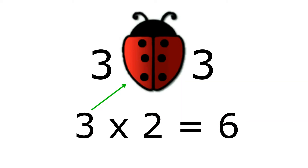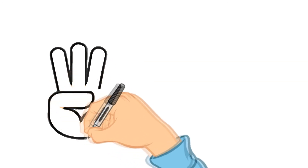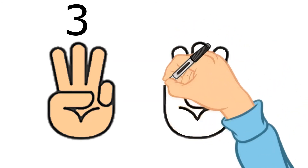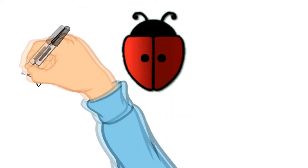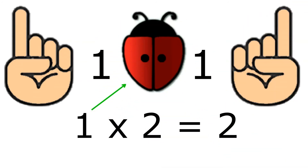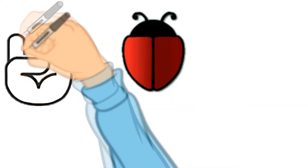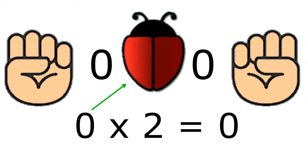We can do this with our fingers. Put one hand out and hold up three fingers — that represents three spots on one ladybug wing. Then mirror it with the other hand holding the same number. You're holding up six fingers in total. We could do the same with other small numbers: a ladybug with one dot on each wing needs two in total — one finger on each hand. And a ladybug with zero dots on each wing? Zero fingers up — zero spots.